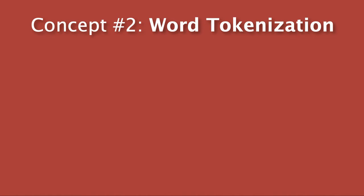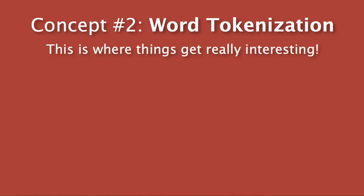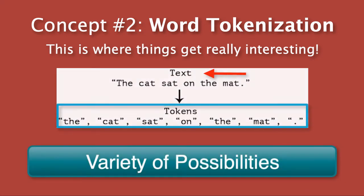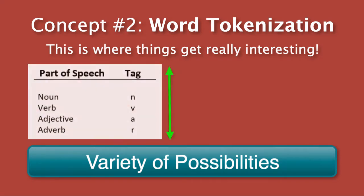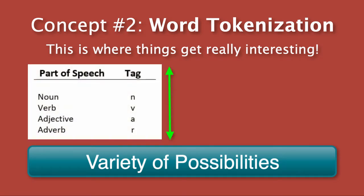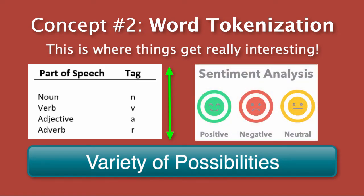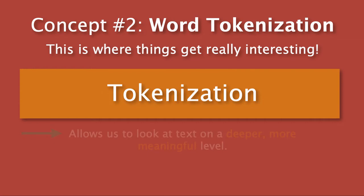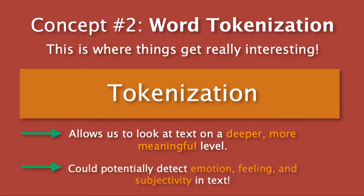The second major NLP concept is known as word tokenization. This is where things get really interesting. By dividing up text into individual words, a variety of possibilities open up, including the ability to gauge the frequency of certain parts of speech and the power to perform sentiment analysis, which is a concept we will be exploring later on in this course. Tokenization, in general, allows us to look at text on a deeper and more meaningful level, and can also help detect emotion, feeling, and subjectivity within media articles and science journals.